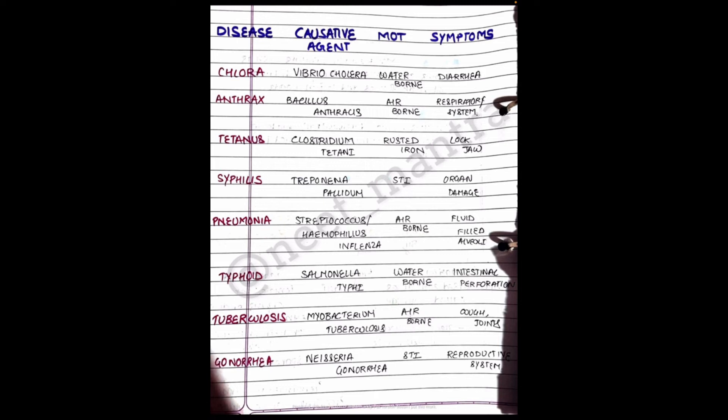Next we have Pneumonia. It is caused by Streptococcus or Haemophilus influenzae. It is also airborne or droplet infection, and in this disease the alveoli are filled with fluid. In COVID, pneumonia was also a main cause of death of many patients.